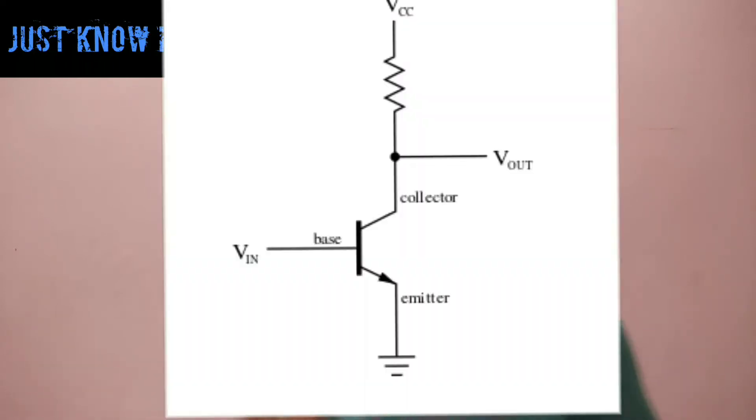Transistors — basically a switch for electrons. Electrons travel, and the transistor can block or allow flow in an open direction.